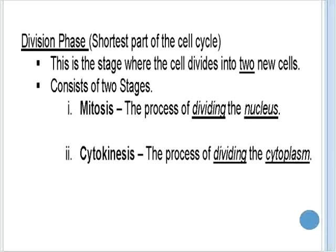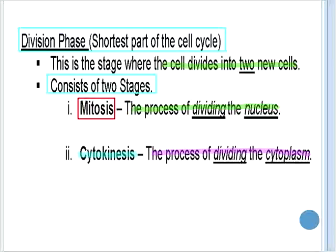The division phase is the shortest part of the cell cycle. During this stage, the cell divides into two new cells, and it can be broken up into two distinct sections. The first of these is mitosis, and during mitosis, the nucleus divides. The second stage is cytokinesis. During cytokinesis, the cytoplasm divides.